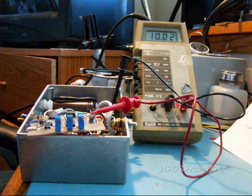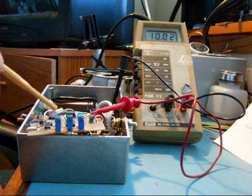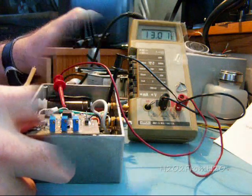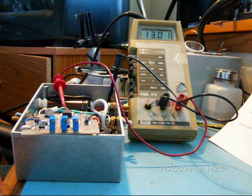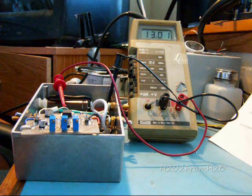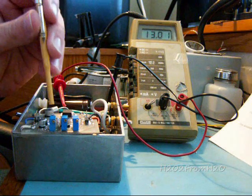Now we need to set our pots up. So the potentiometers need to be into known positions. Okay, so we want to start with VR1. The VR1 is your duty cycle. And the VR1 is located right here.